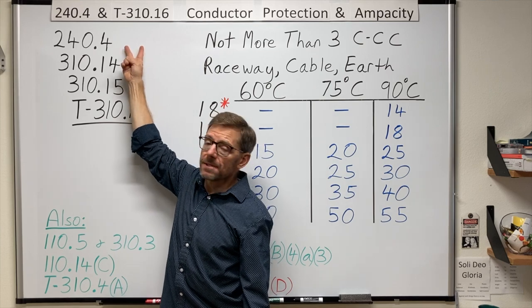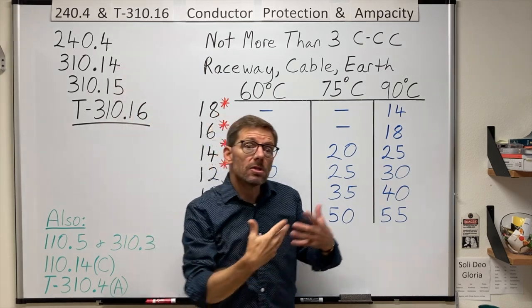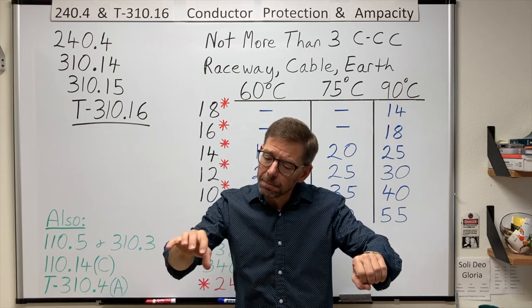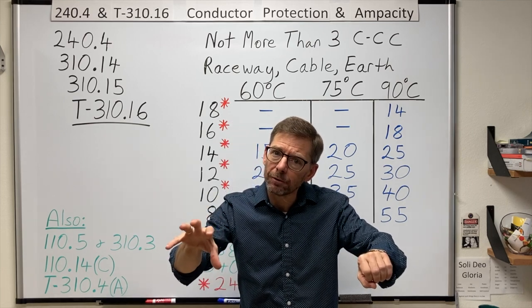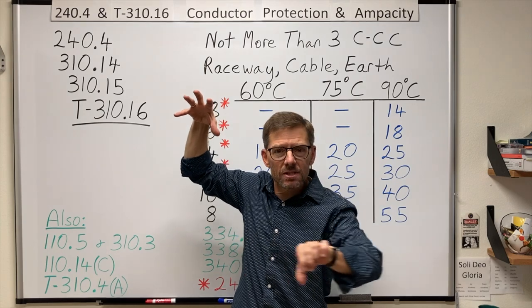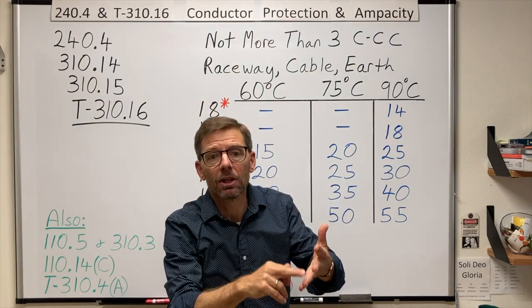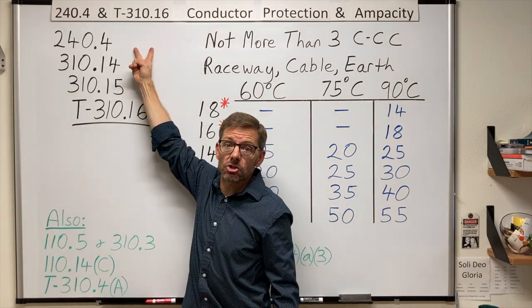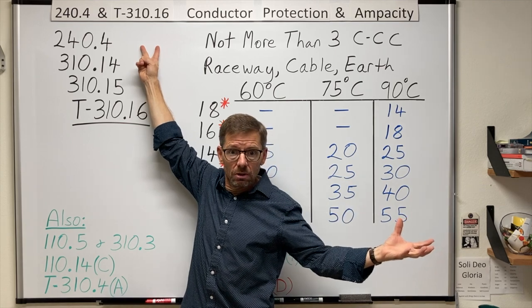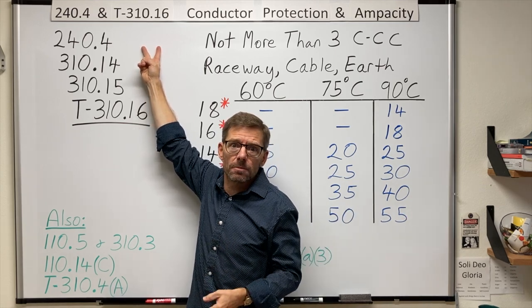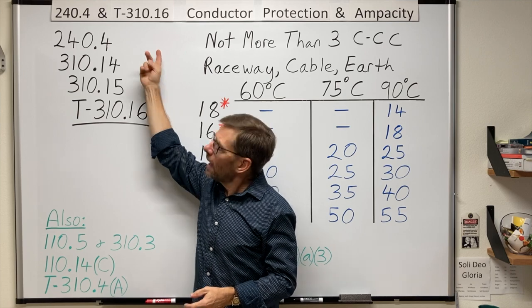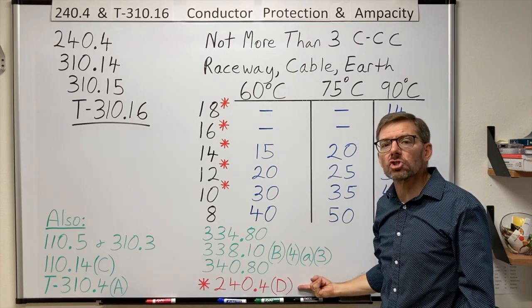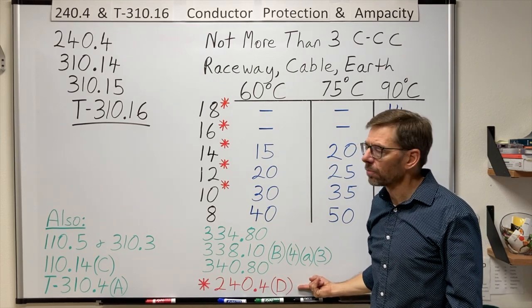These subsections here allow certain permissions or have restrictions. A permission might look like a conductor that appears to be protected by an overcurrent device that is too big for its size. Think of motors, tap conductors, welders, other things. And they're specified in these subsections. It tells you where to go in the code to make safe installations in those circumstances. And a restriction we're going to bump into shortly is in 240.4D for small conductors.